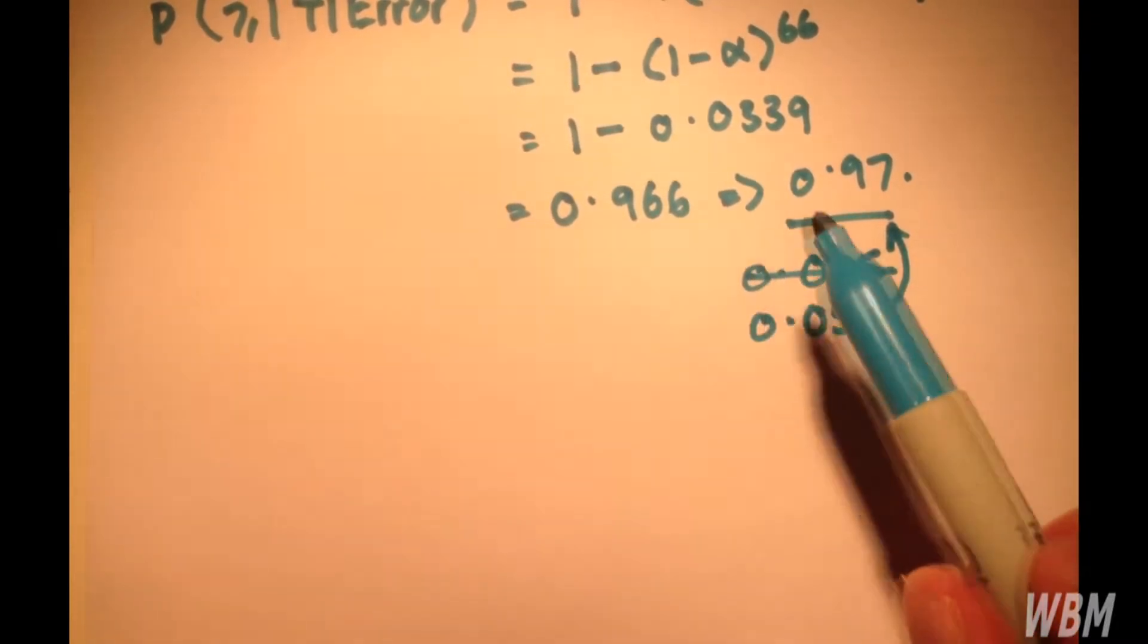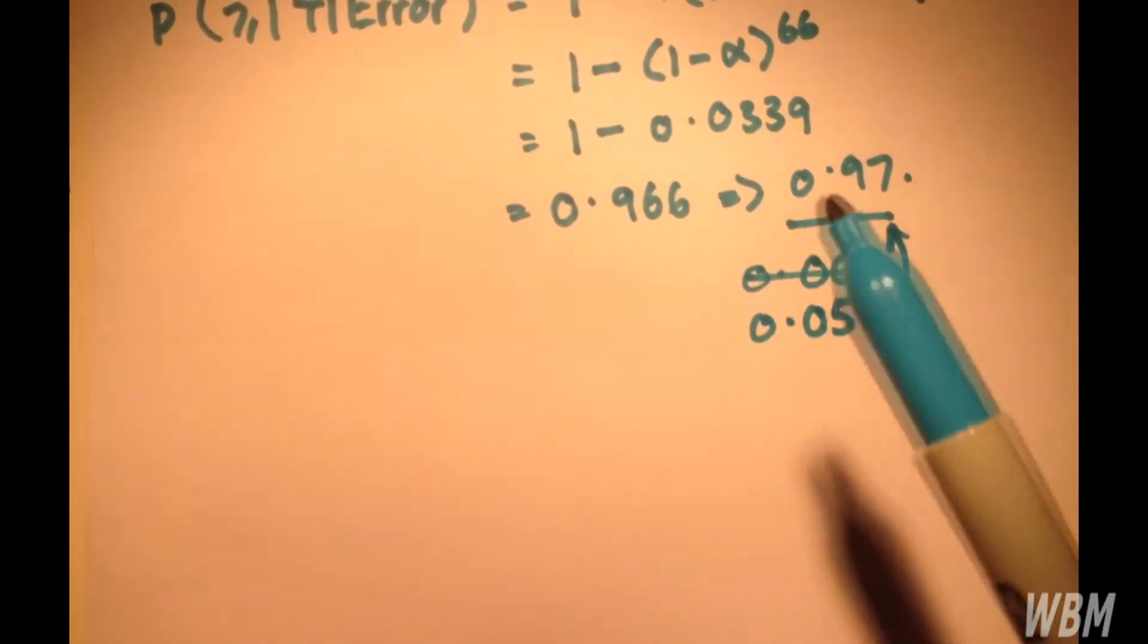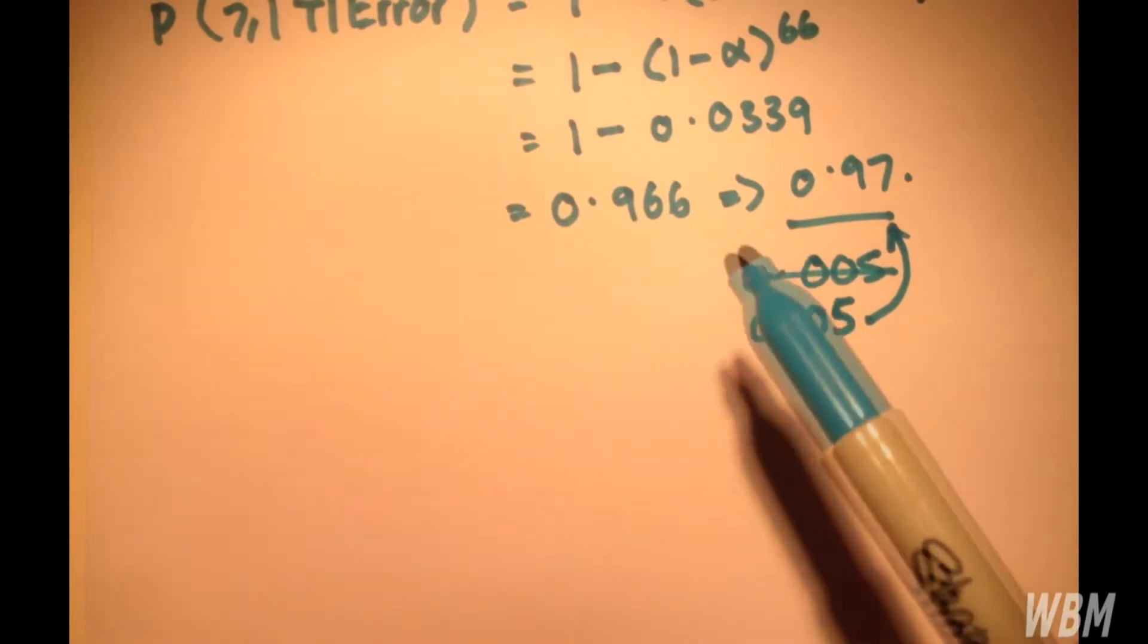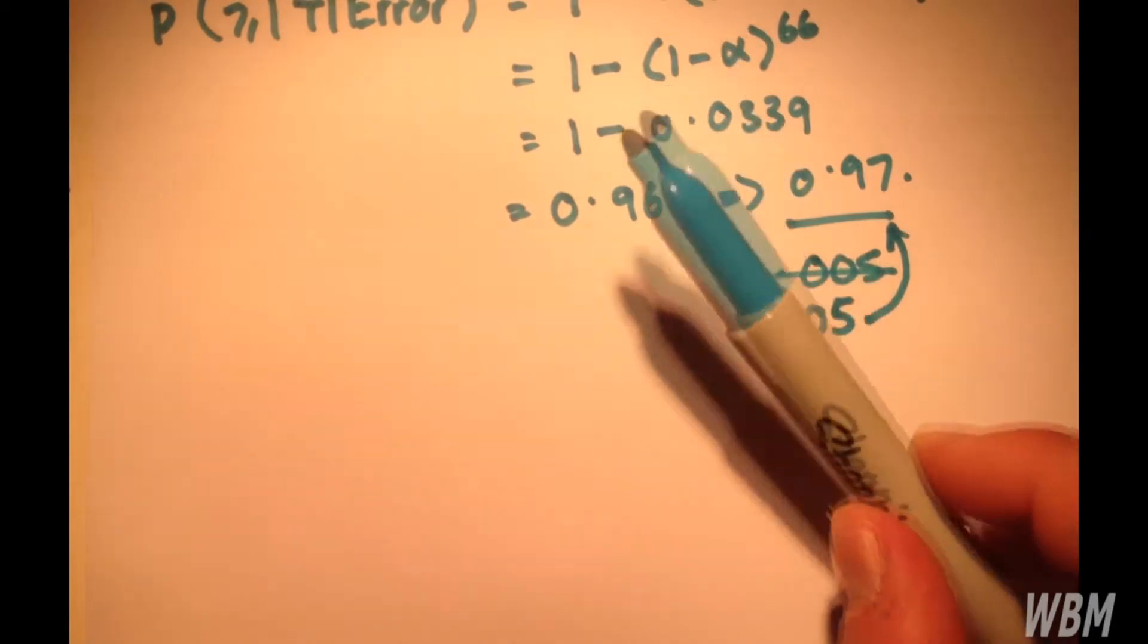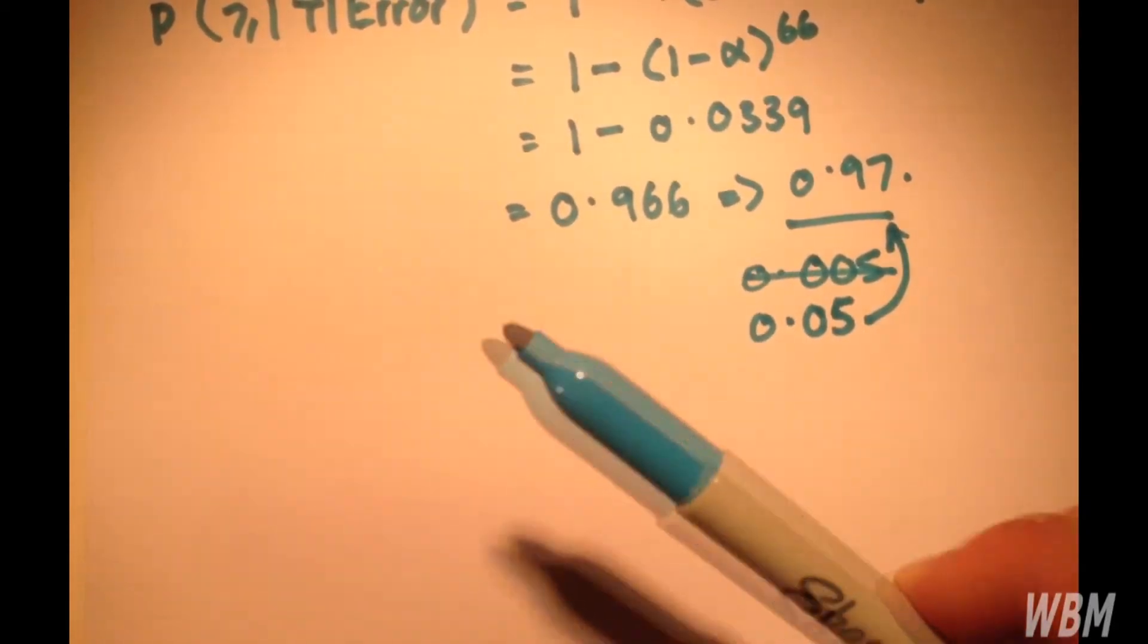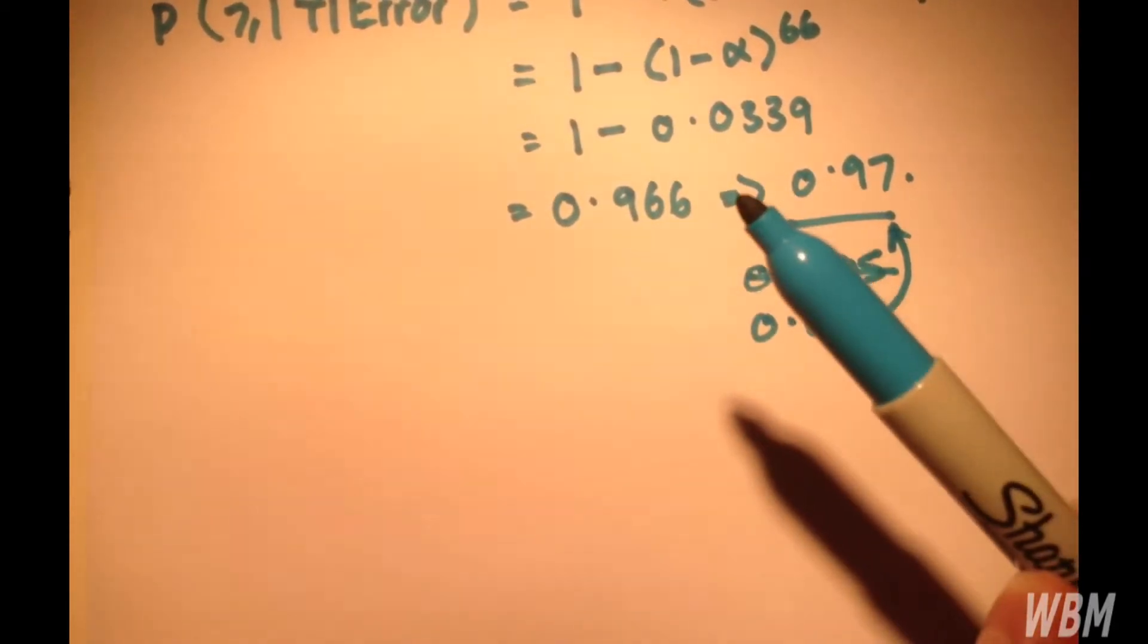so this is our method for solving it, by testing each one of the 66 at 1 over n times what we would test for 1.